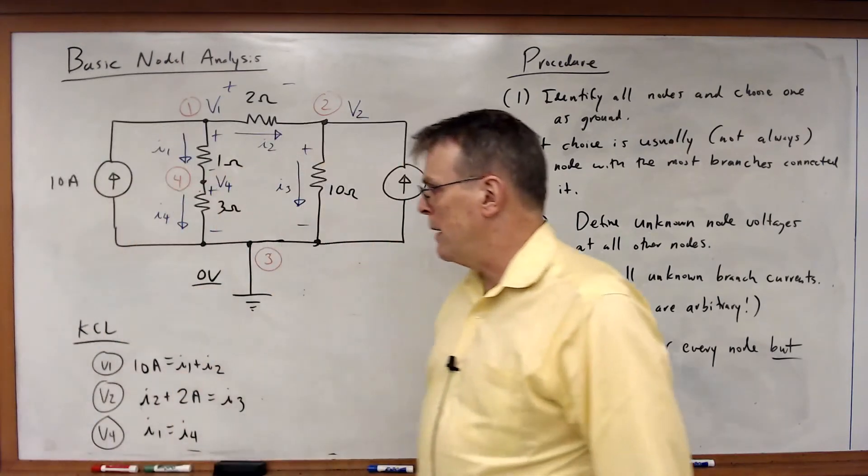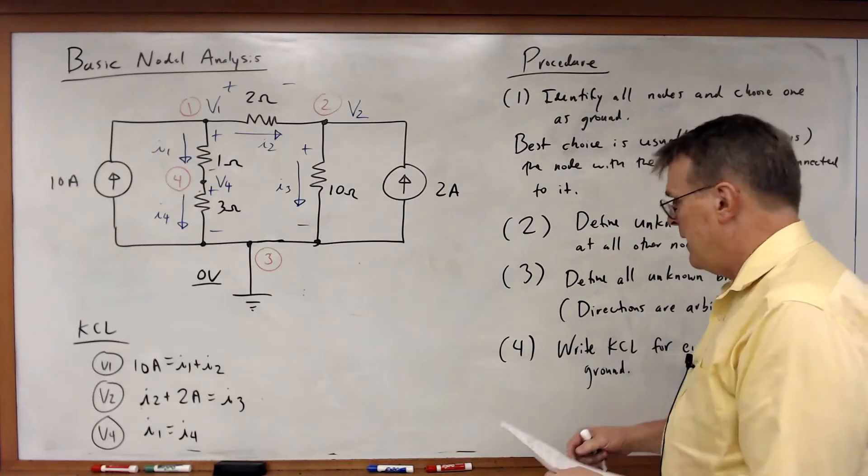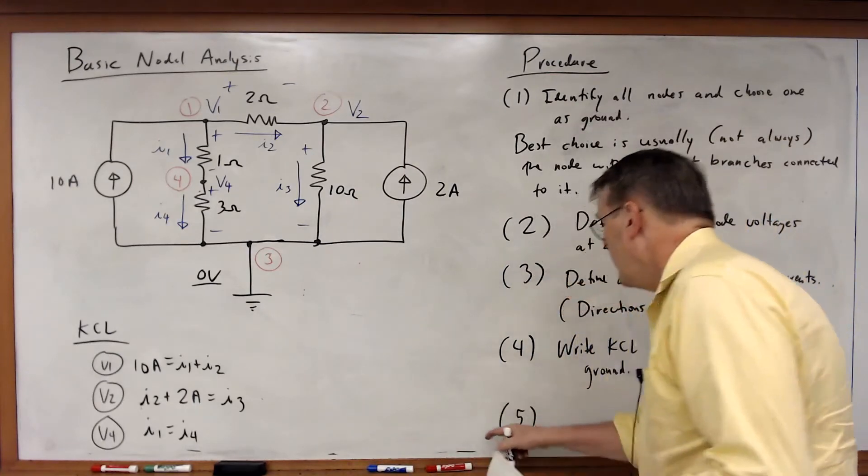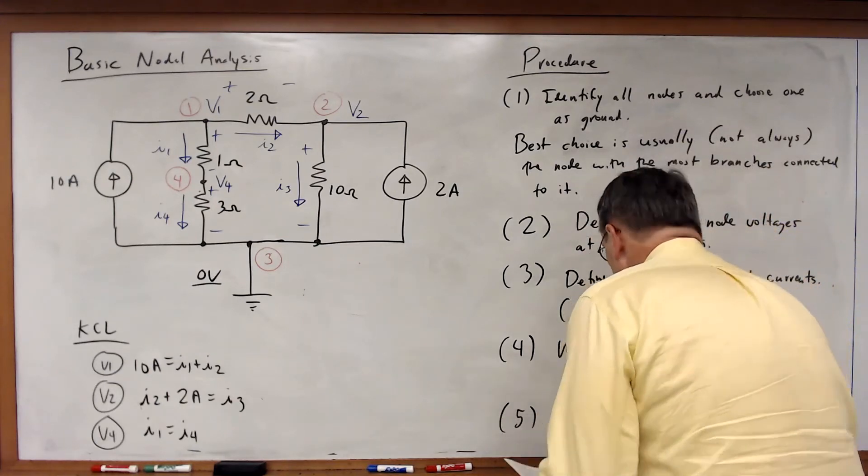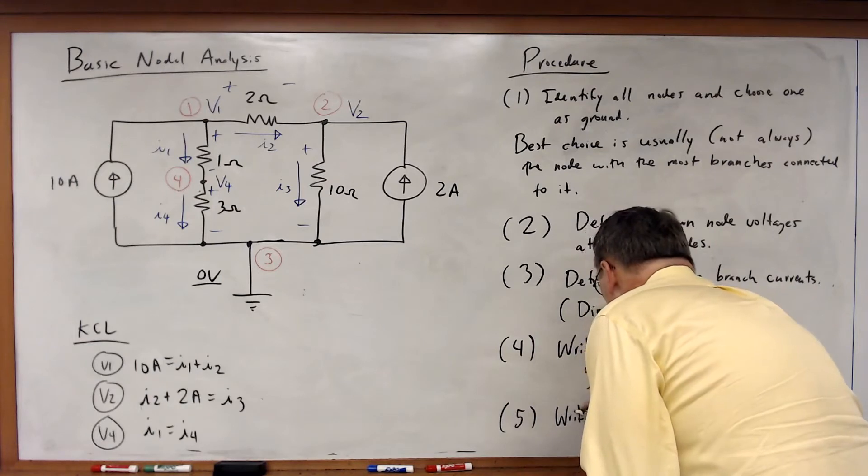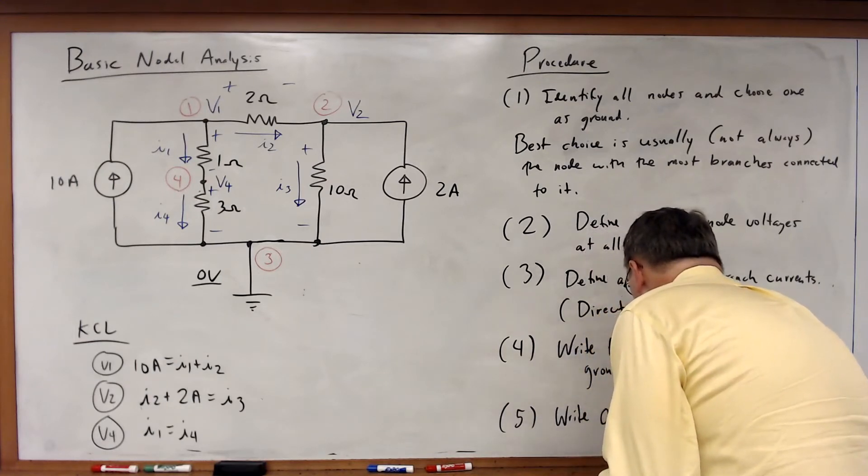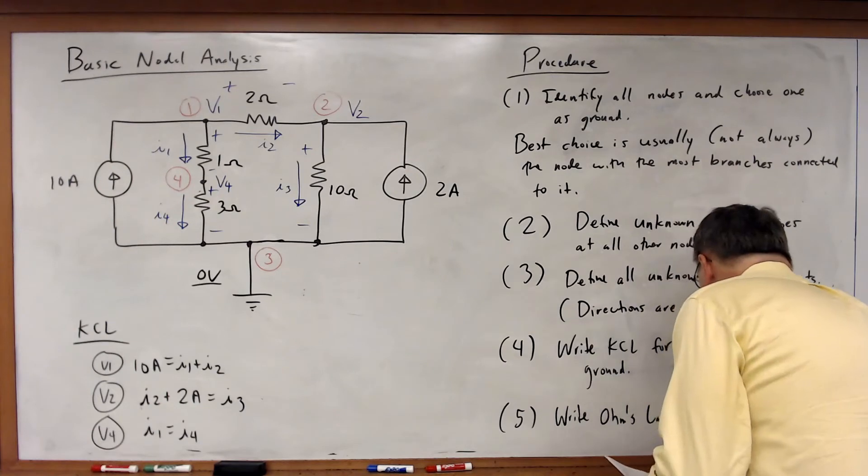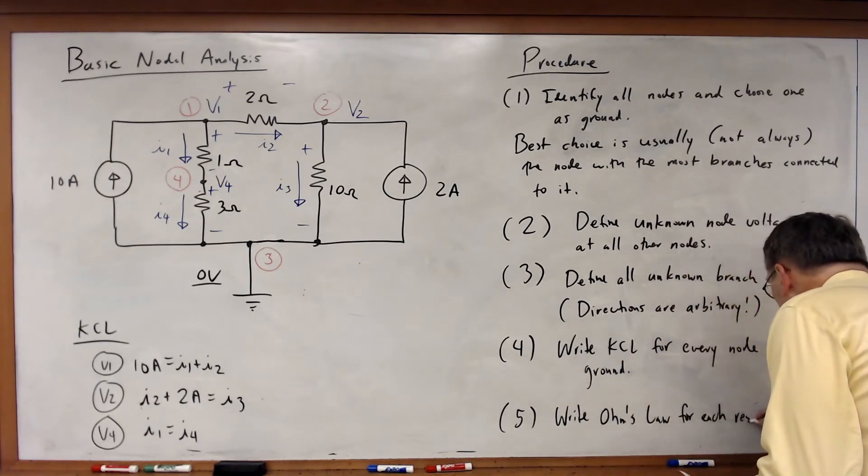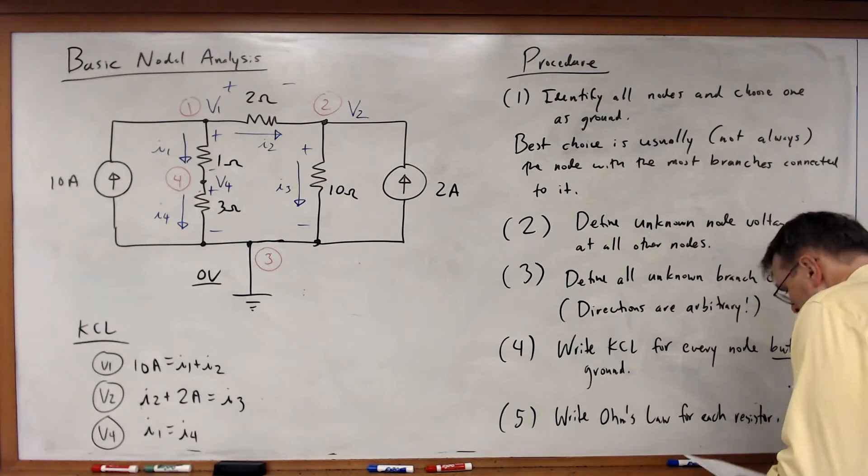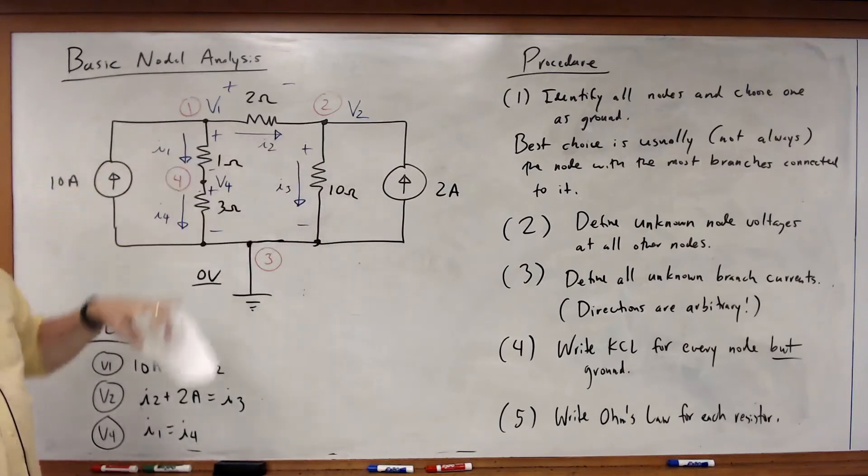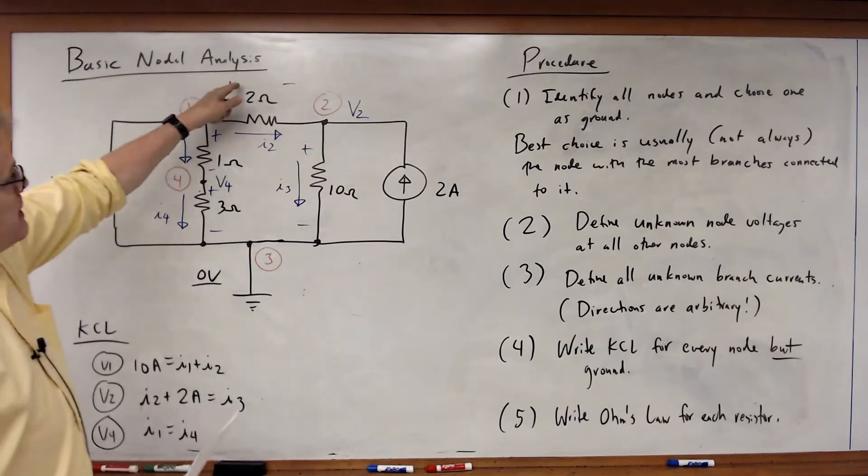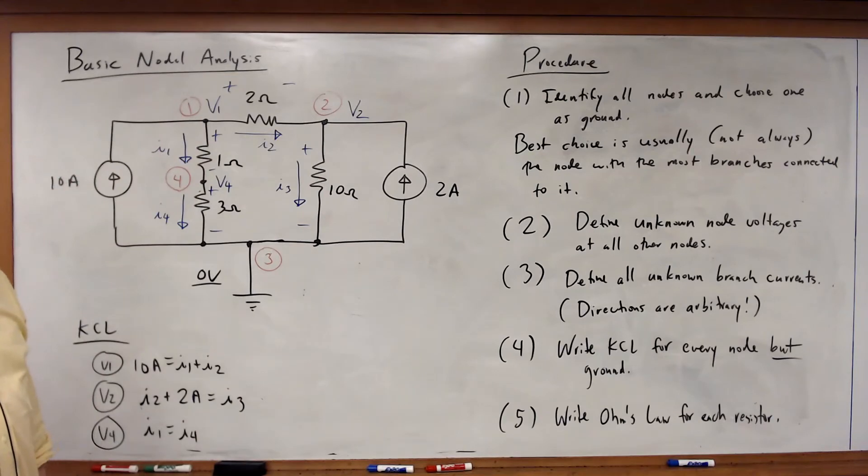So those are my KCL equations, and last step, I need to write Ohm's Law for every resistor. But I'm going to write Ohm's Law in terms of the node voltages. Notice I didn't define a variable for the voltage drop. I'm not going to do it that way. I'm going to write these voltages in terms of the node voltages.